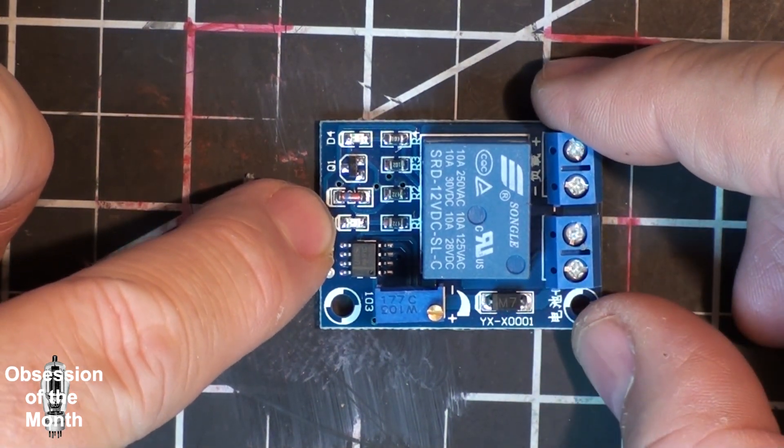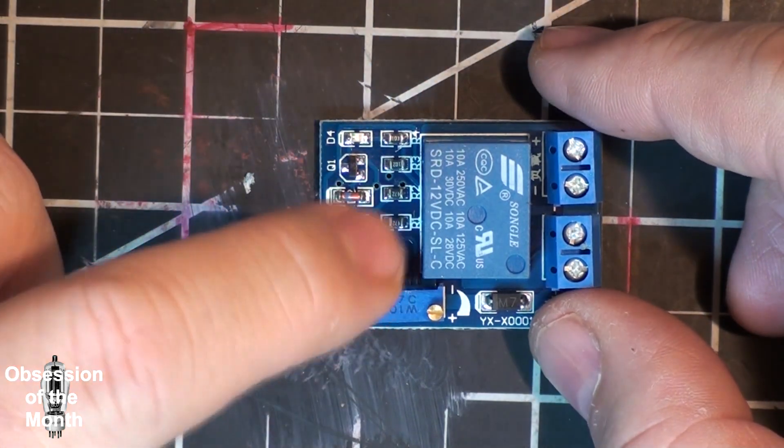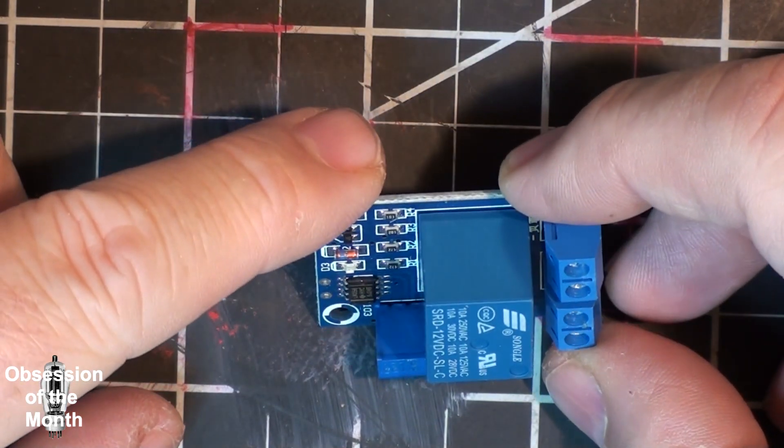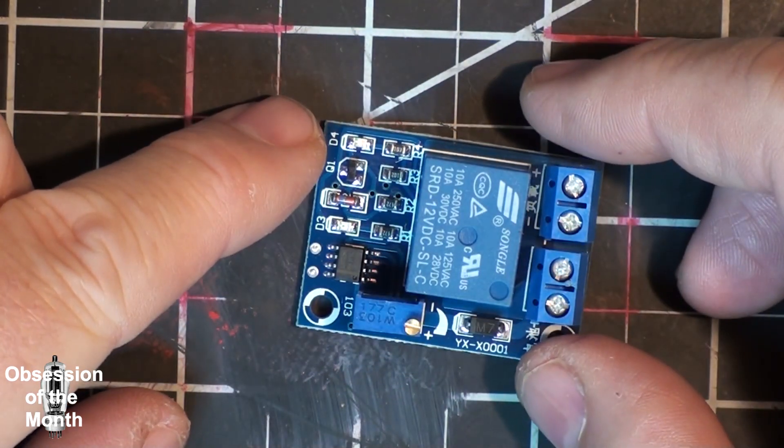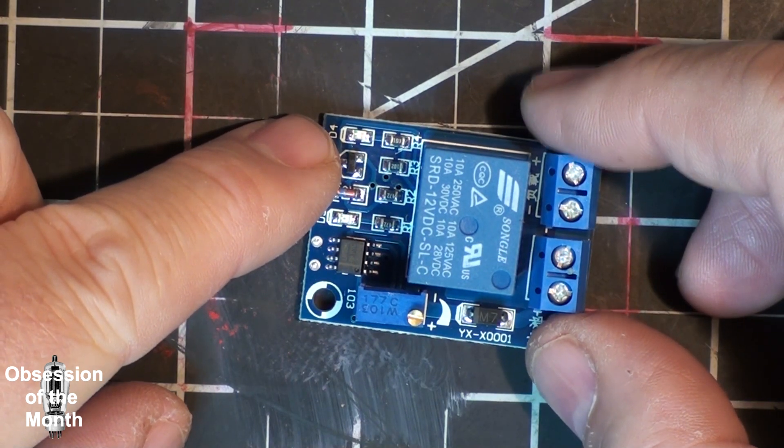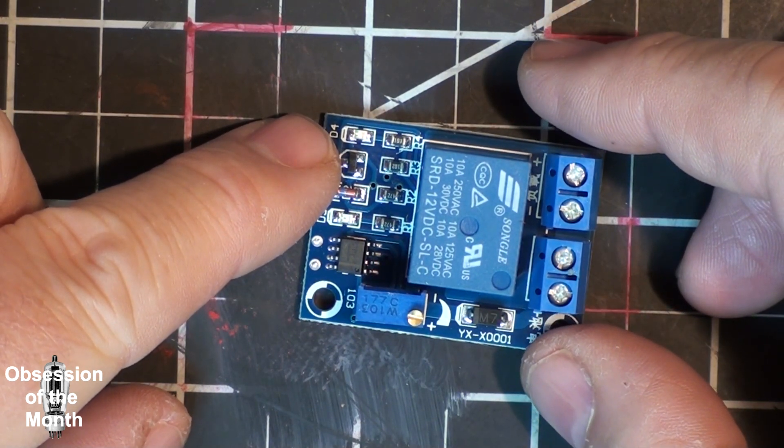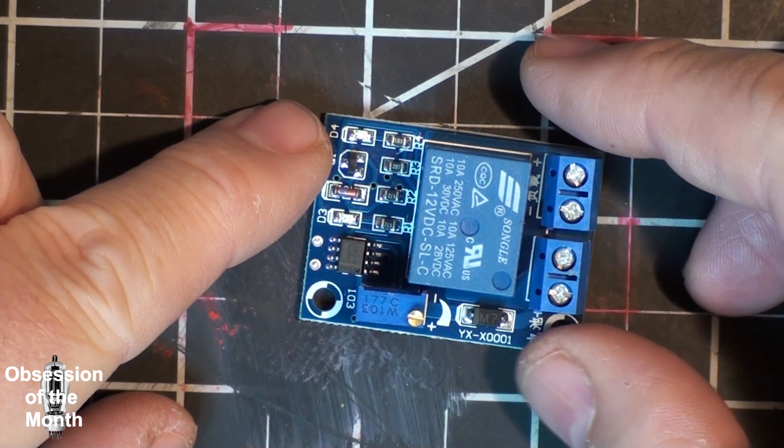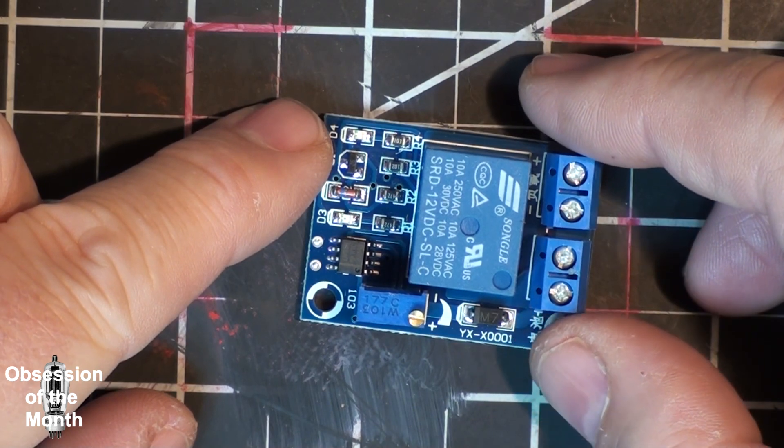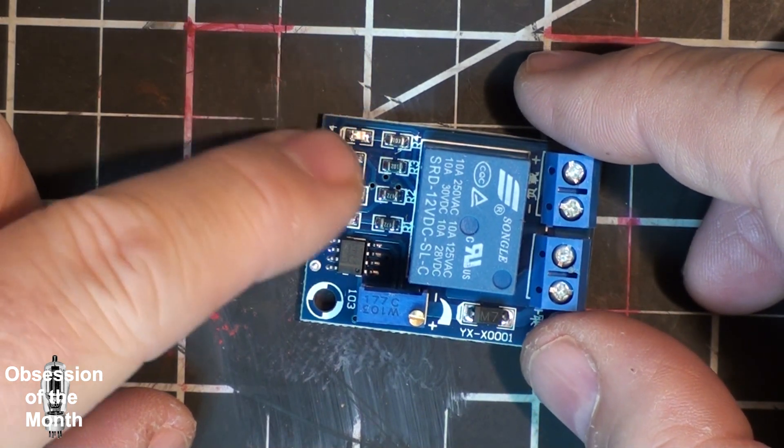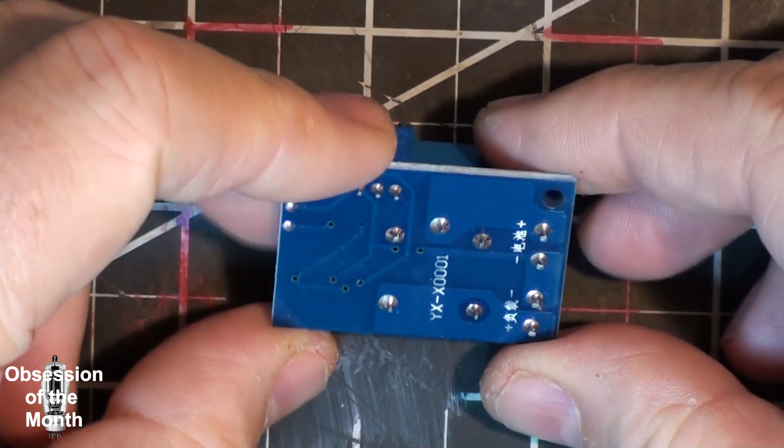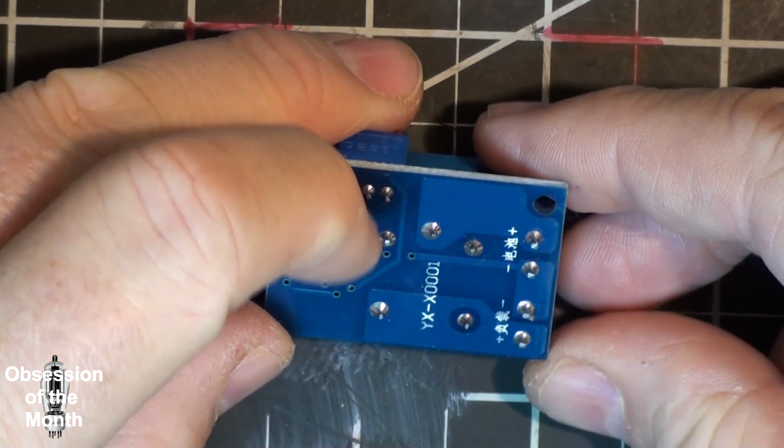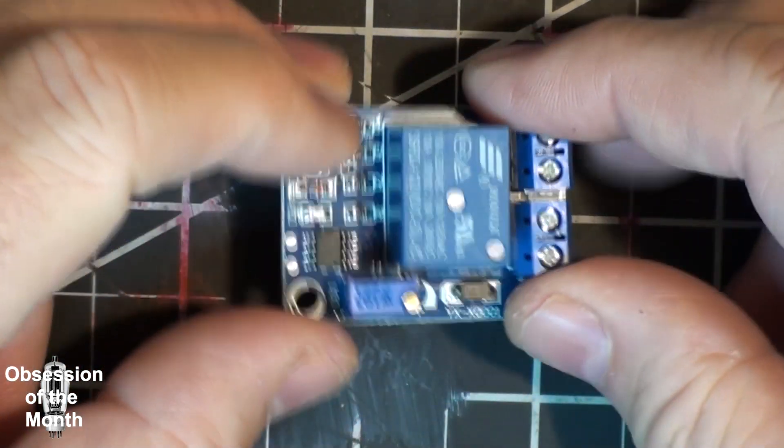The LED indicates it has power. There's a pot to adjust the voltage at which it will cut out. It's meant for 12 volts DC. Power consumption is less than 10 milliamps. It can handle a 10 amp resistive load, and based on what I'm seeing here with these traces, that's fairly accurate. It probably can handle it no problem.